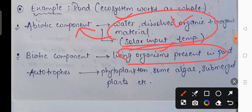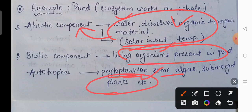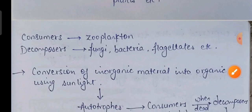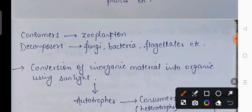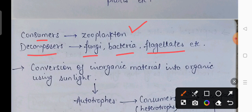Ab inme se kon se autotrophs hain, kon se consumers hain. Autotrophs, jaise hum log jante hain, ye woh organisms hote hain jo apna khana khud banate hain. Iske example hain phytoplanktons aur submerged plants. Consumers woh hote hain jo autotrophs ke upar feed karte hain — yahan pe zooplanktons. Decomposers mein fungi hai, bacteria hai, aur kuch flagellates hain jo decomposers ya saprophytes ki tarah kaam karenge.